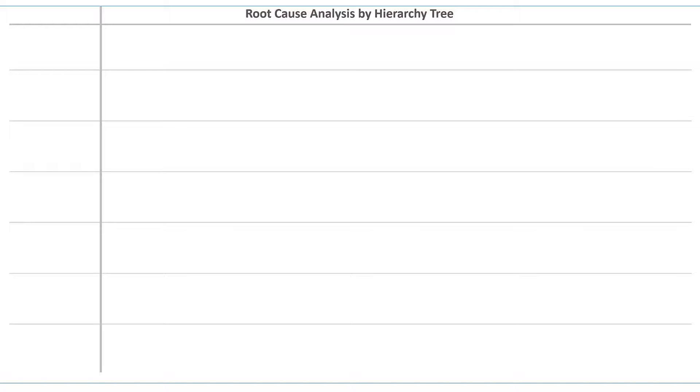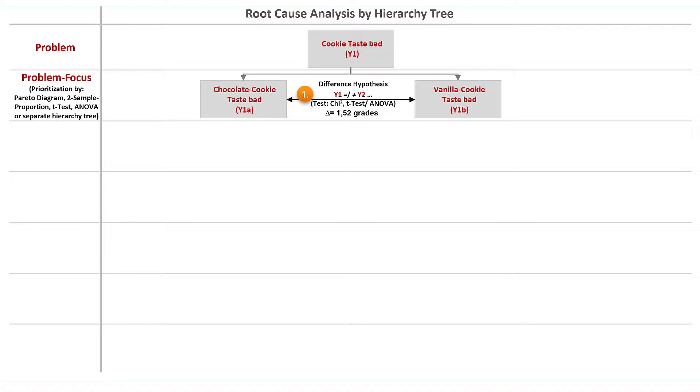In the workshop I explain to the experts of our bakery that I started with the primary problem – cookie tastes bad. With the t-test I found out that primarily chocolate cookies are affected, and illustrate this focus by dividing the overall problem. With a regression analysis I then show, for the first cause level, that the taste of chocolate cookies depends on the amount of chocolate in these cookies.